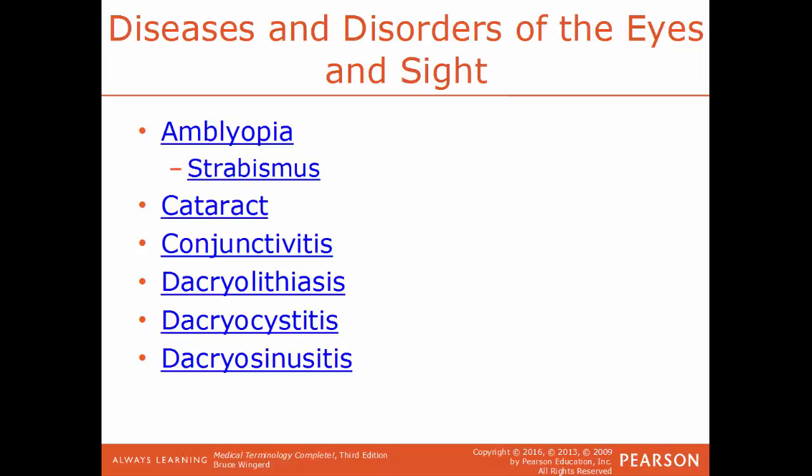Dacryolithiasis is a condition where you have stones found within the tear ducts. They can lead to dacryocystitis, which is an infection of the lacrimal sac — the sacs where tears are actually produced. They become infected, and that infection spreads from the tear ducts onto a sinus within the skull, giving us the last term here: dacryosinusitis — an infection of the lacrimal sac plus the sinus.